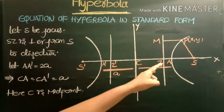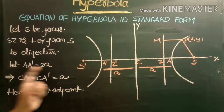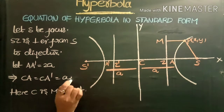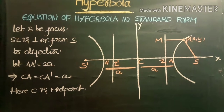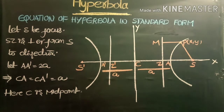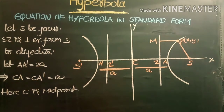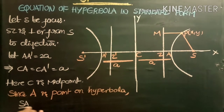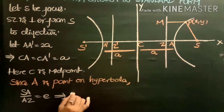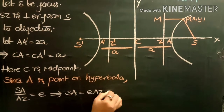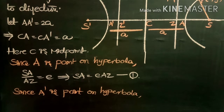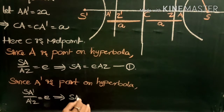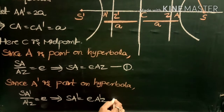S is the focus and S-shed is the perpendicular from S to the directrix. We let A A dash equal 2a, so CA equals CA dash equals small a, since C is the midpoint. Since A is a point on the hyperbola, by definition SA divided by AZ equals e, which implies SA equals e times AZ — equation 1. Similarly, SA dash by A dash Z equals e, so SA dash equals e times A dash Z — equation 2.